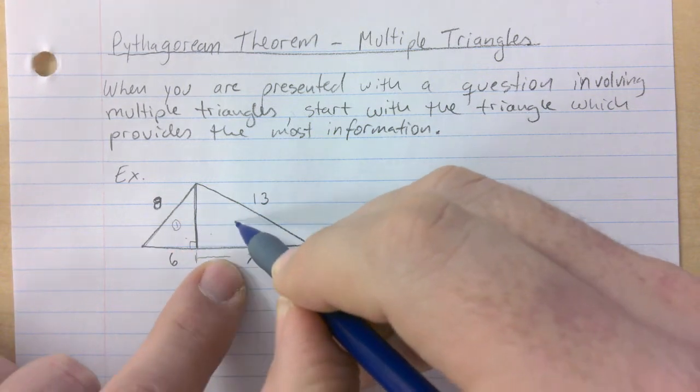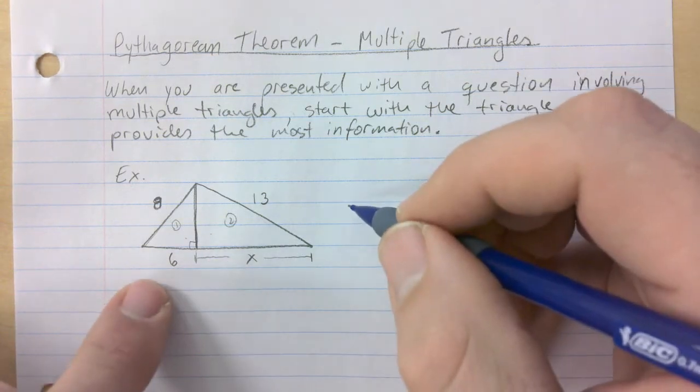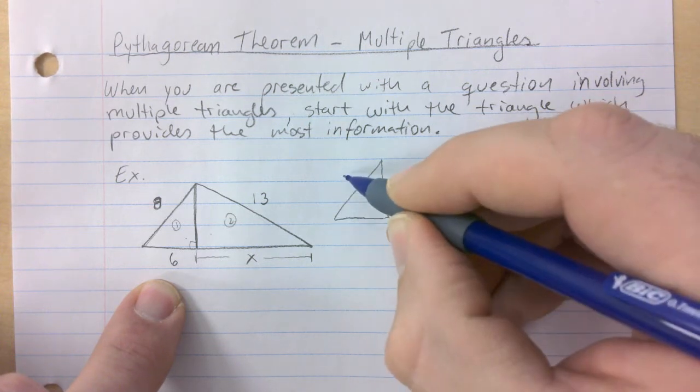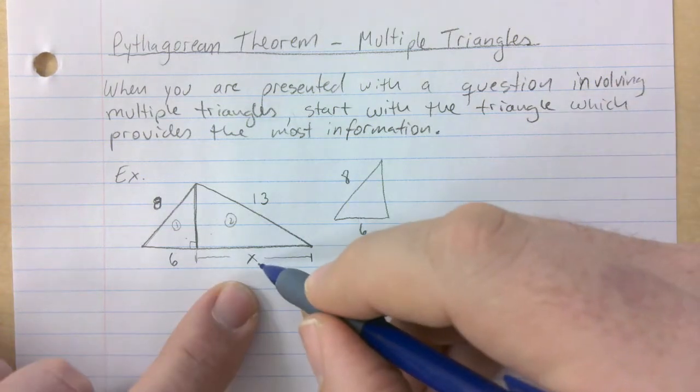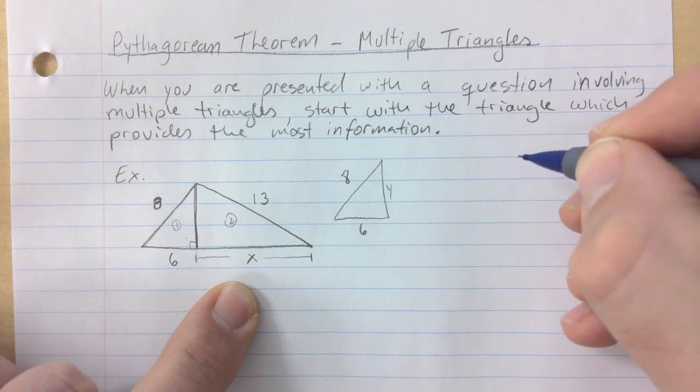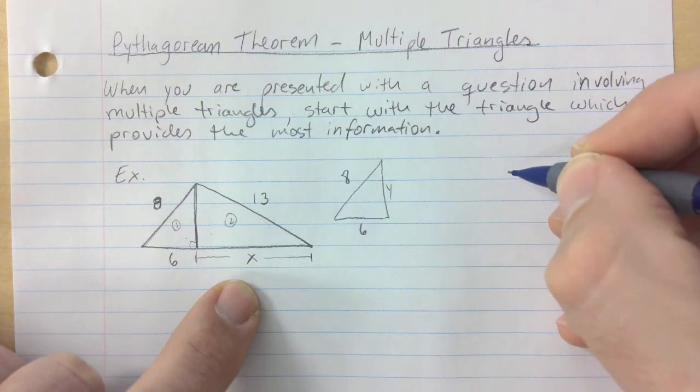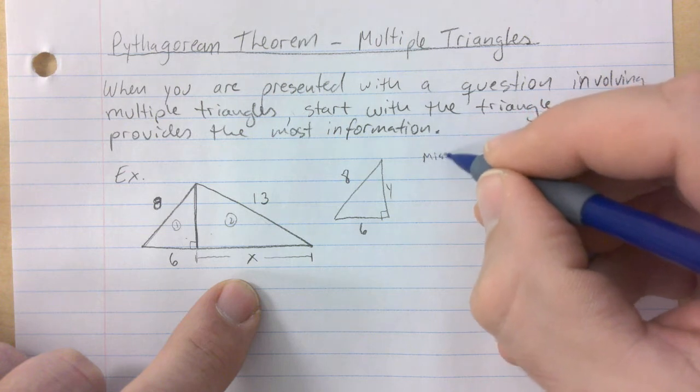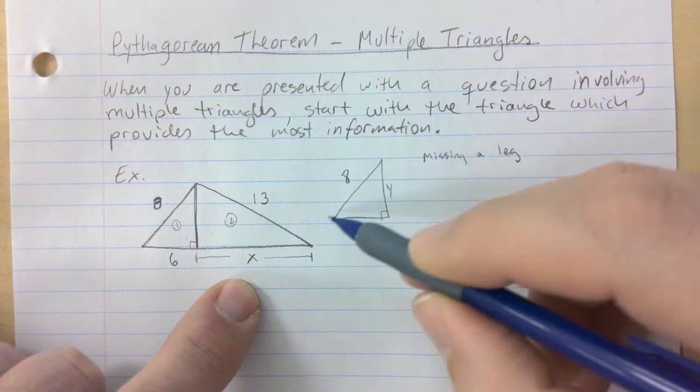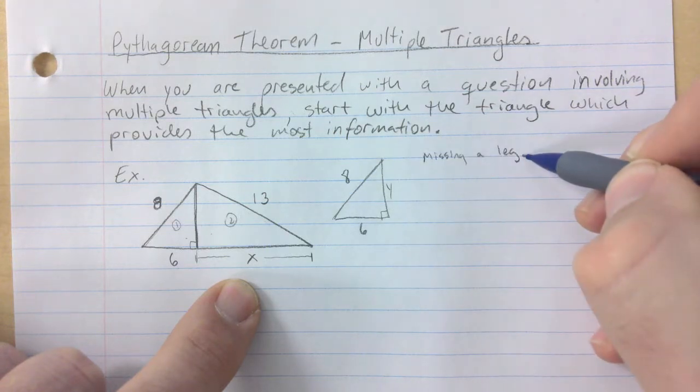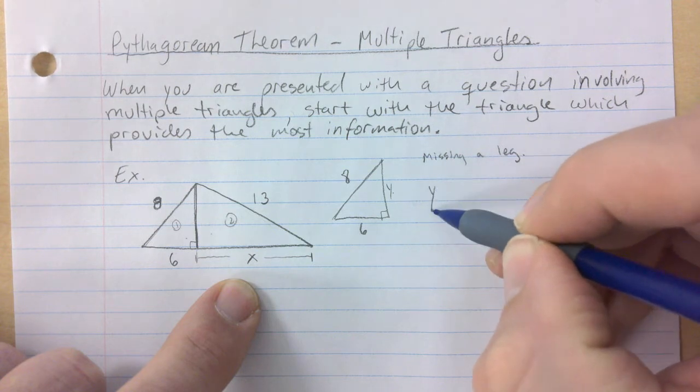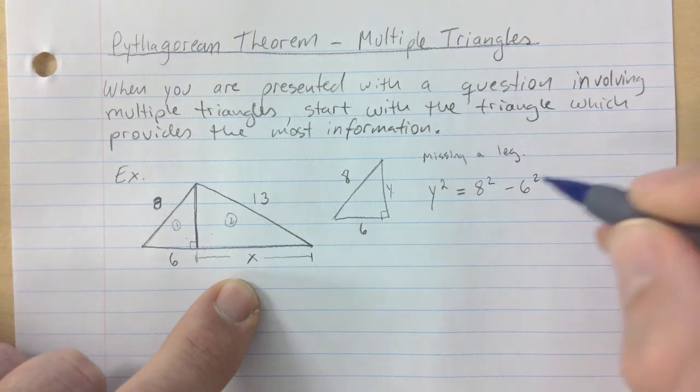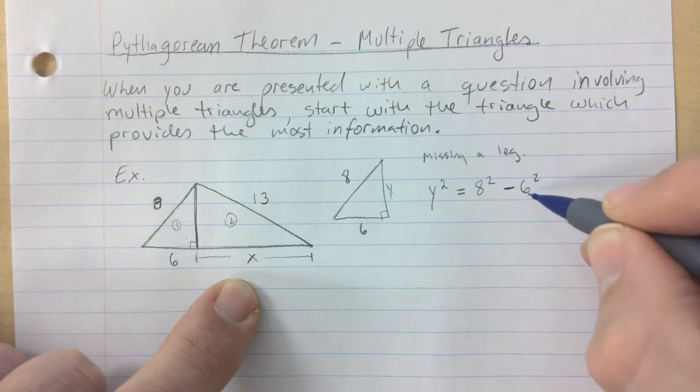We will start with this one here. I'll just draw it quickly, this is eight and six. Because X is already taken we're gonna call this Y. If you think about it, Y is a leg, we're missing a leg because the hypotenuse is given here.